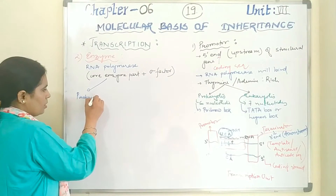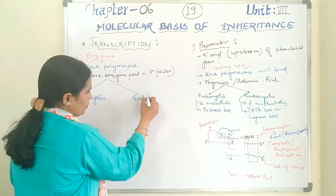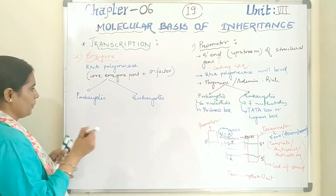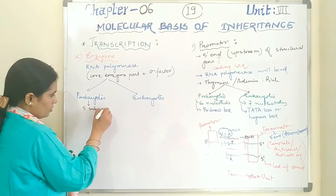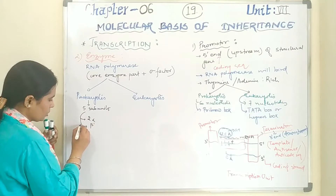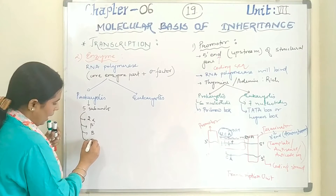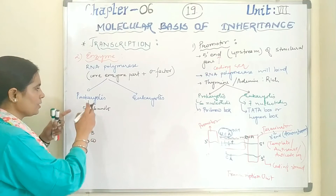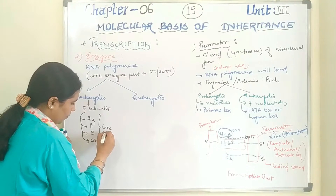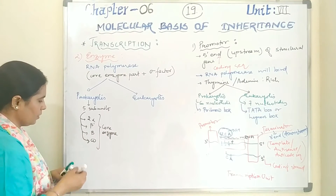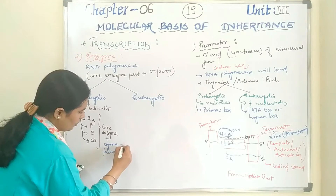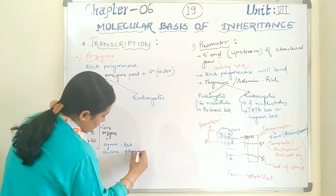In prokaryotes, RNA polymerase is made up of 5 subunits: 2 alpha (α), beta-prime (β'), beta (β), and omega (ω). These five subunits form the core enzyme. When the core enzyme attaches with the sigma factor, it becomes the complete RNA polymerase holoenzyme.